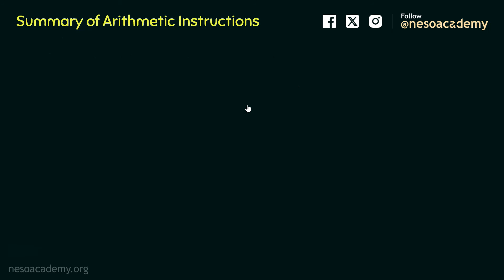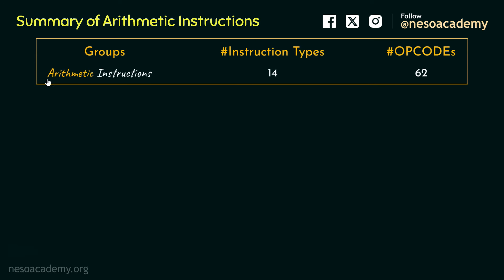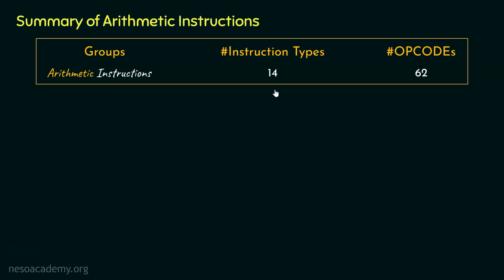In the arithmetic group of instructions, there are 14 different types and in all these types, we have got 62 opcodes. Today we are going to see all of the instruction types at once, and in that process, we will also count the total number of opcodes that we have learnt in this specific group.